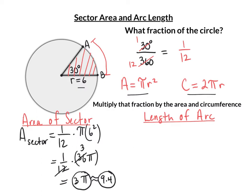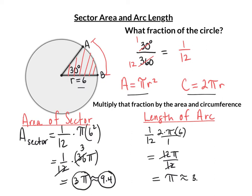To find the distance along the arc from A to B, we want one-twelfth of the circumference — one-twelfth of 2 times pi times the radius, which is 6. We have 2 times 6, which is 12 pi over 12, and the twelves cancel. That leaves us with pi, which to the tenth is about 3.1. Pi is the exact length of that arc, and 3.1 is our approximated length.